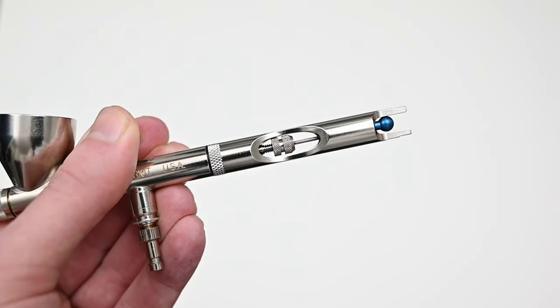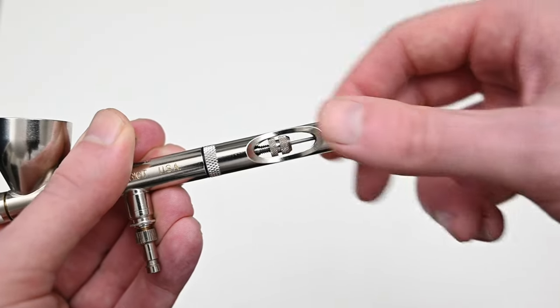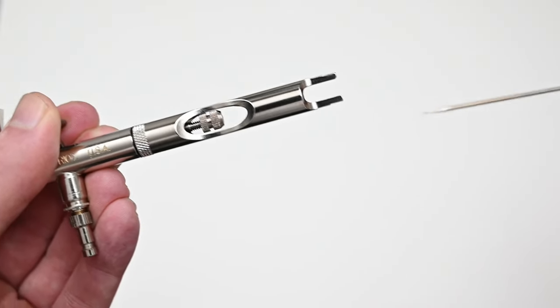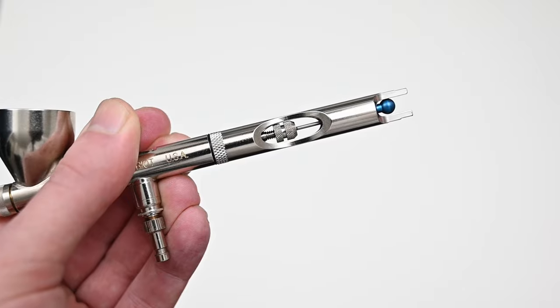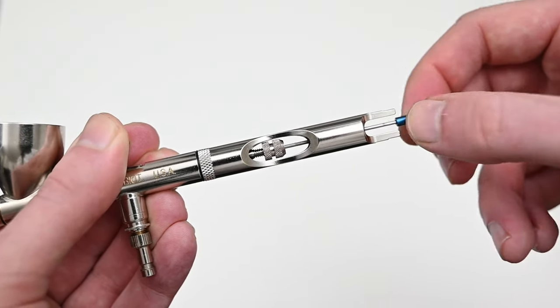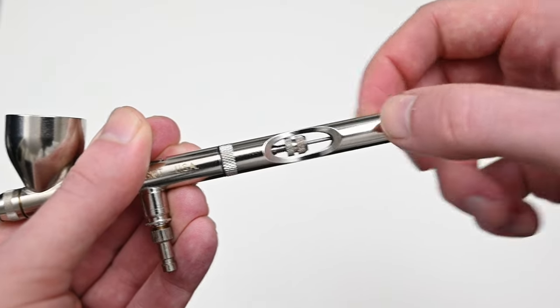But the main thing that I love about the rear handles of Badger airbrushes is that you can quickly access the needle while the handle is still on. When you're painting with an airbrush there's a lot of times where you need to reset the needle. And in order to do this you need to unscrew the chuck, slightly pull out the needle, and then press it back in so it makes a nice seal with the nozzle.